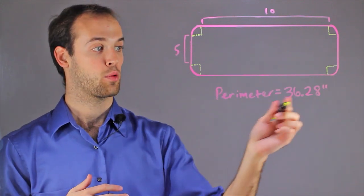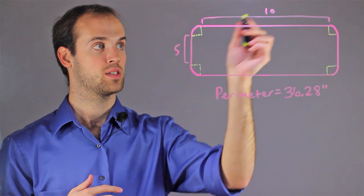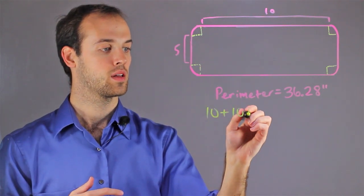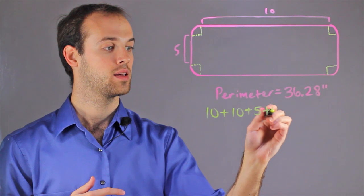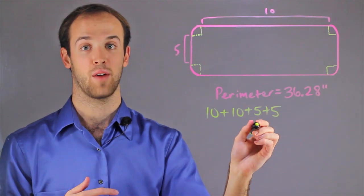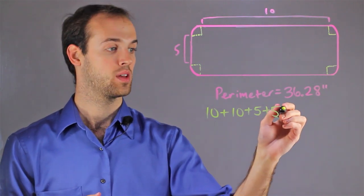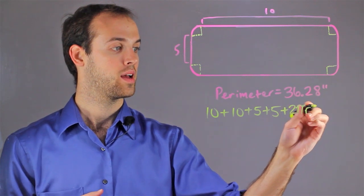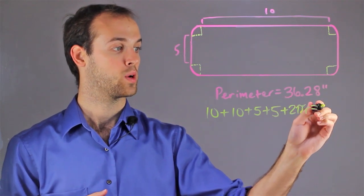So for the perimeter, I'm going to use both lengths, both widths, and the circumference of an entire circle, which is 2 pi r. And that is going to equal 36.28.